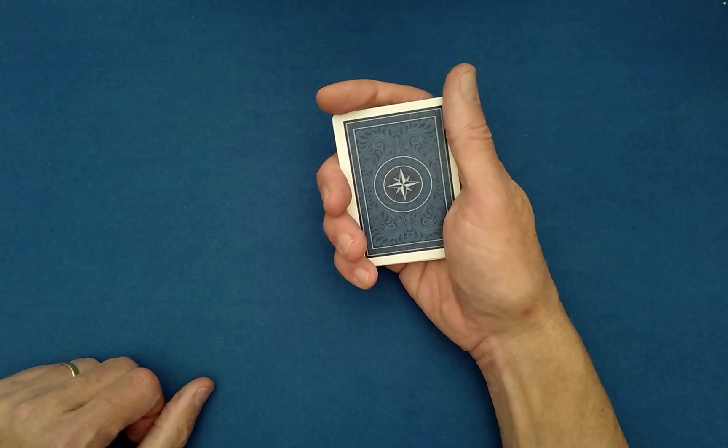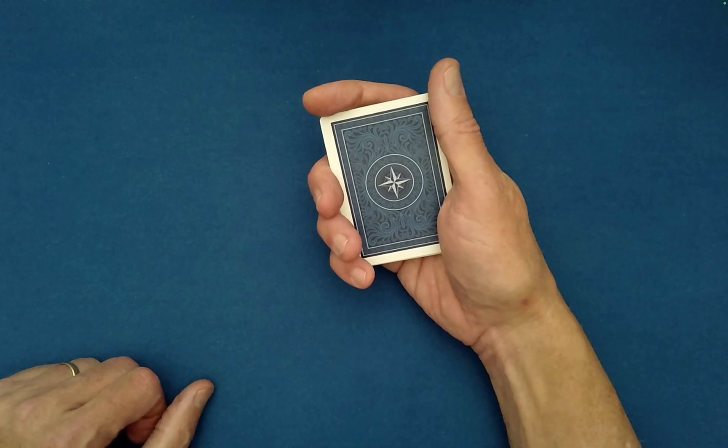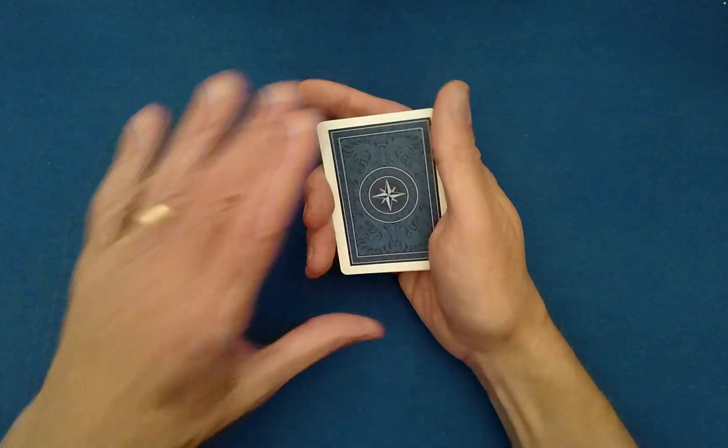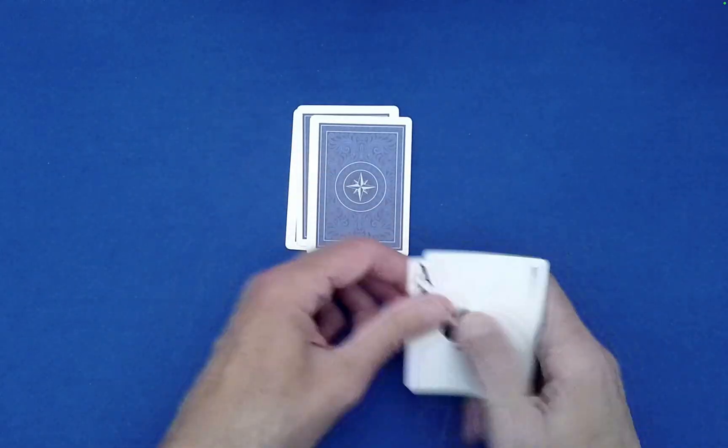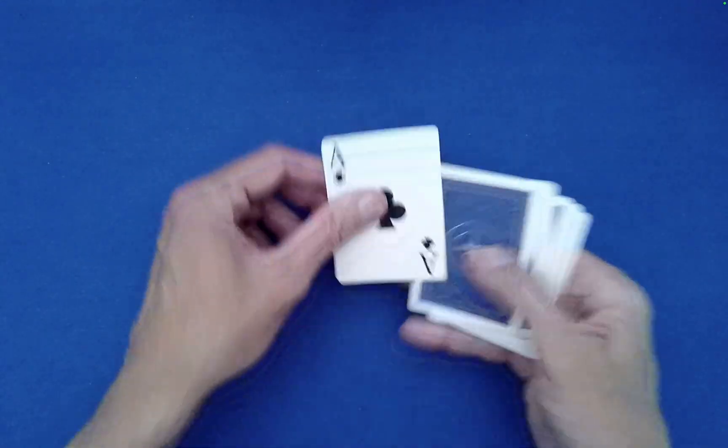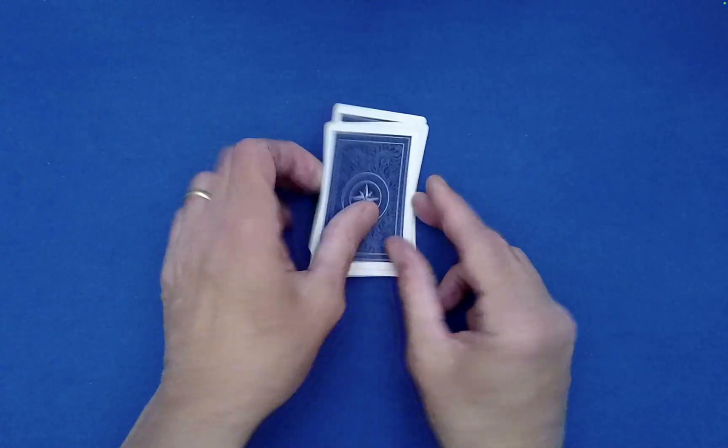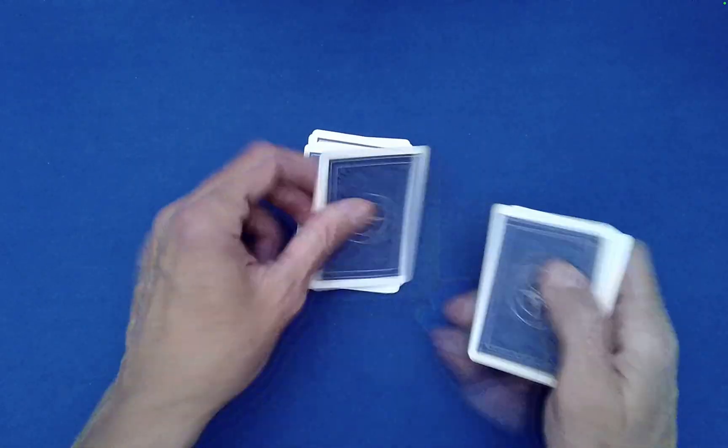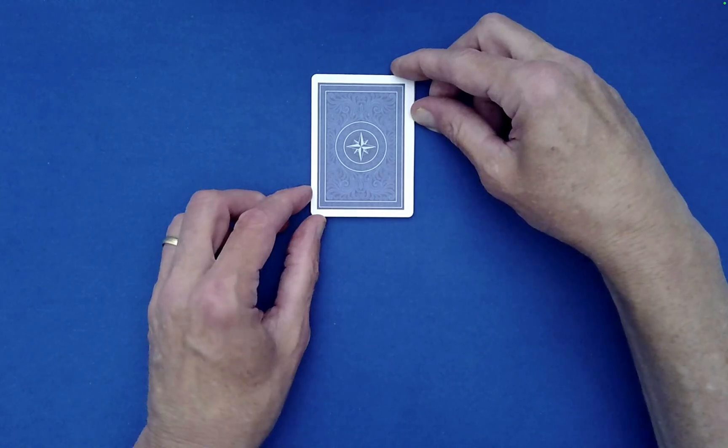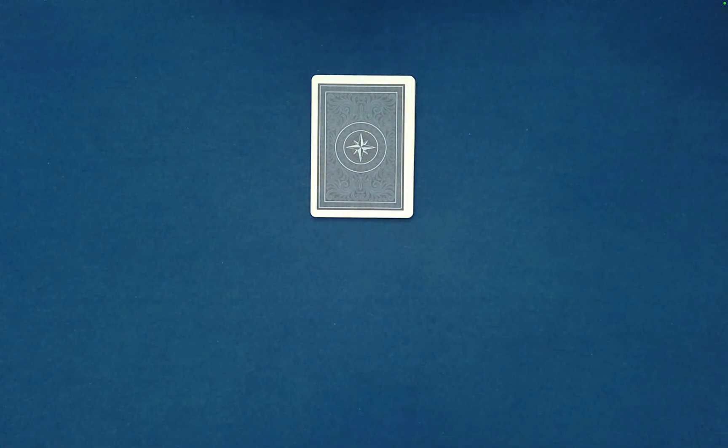At this point all we're going to do is spell out the name of the ace of clubs, which is our helper card here. So what I'm going to do is just spell out A-C-E, drop the rest on top. O-F, drop the rest on top, and then C-L-U-B-S.